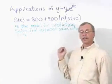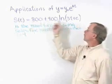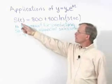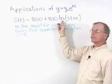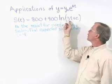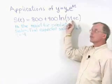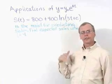Some sales application models involve logarithms. Here's one that says s of t equals 800 plus 400 times the natural log of 3t plus e, where t is the time involved.